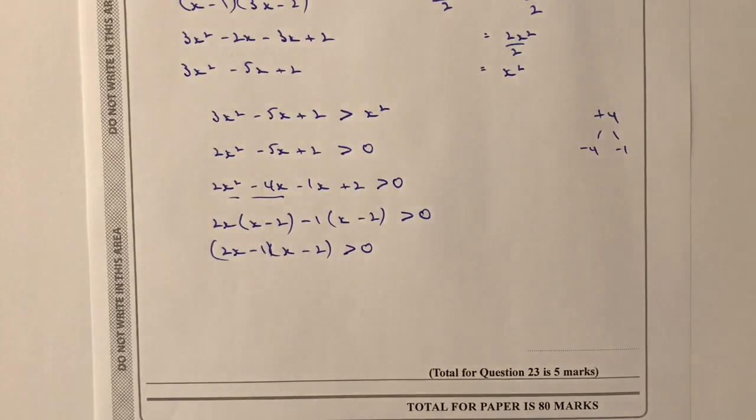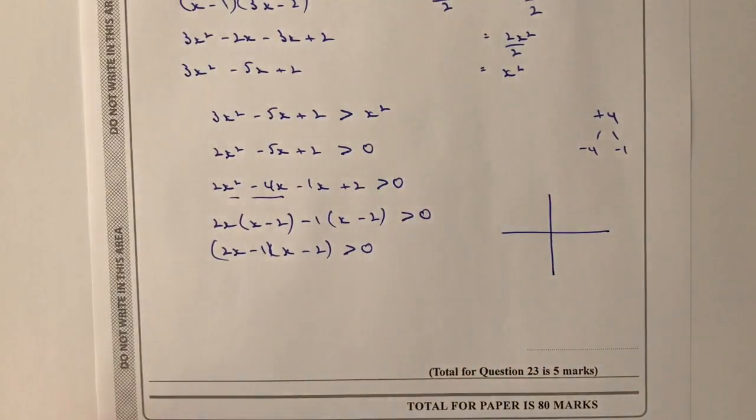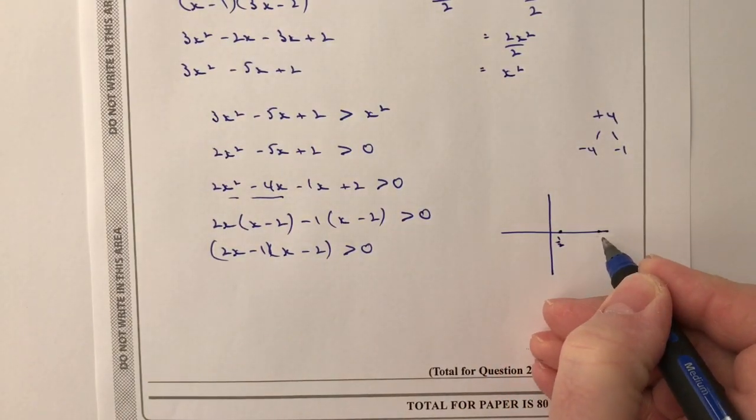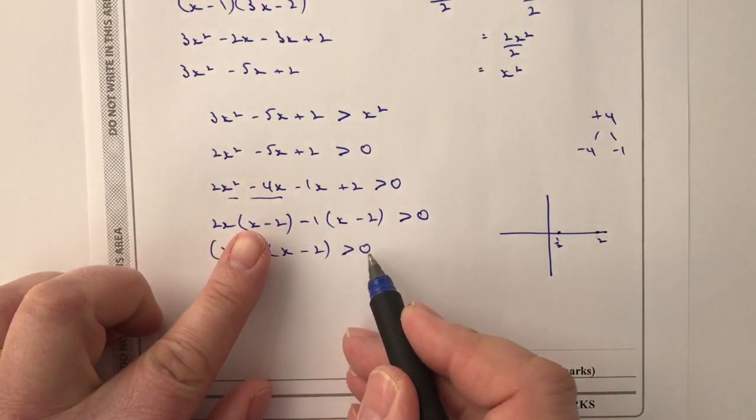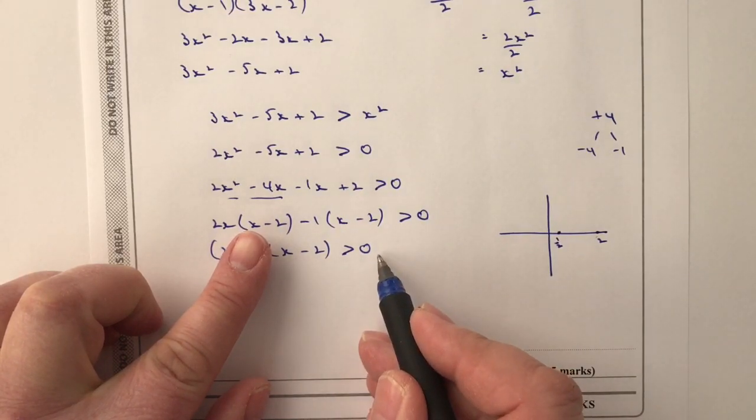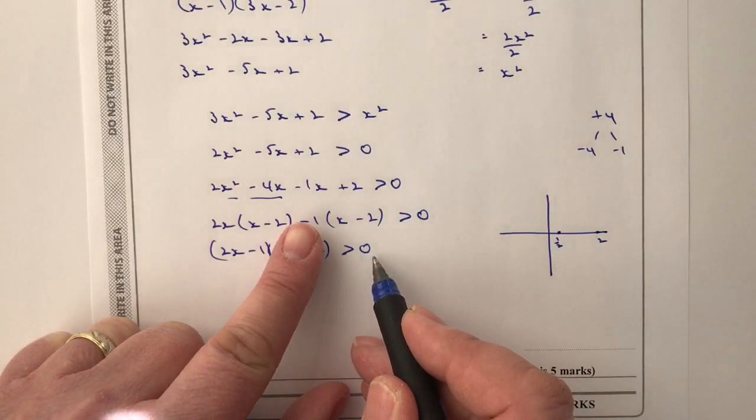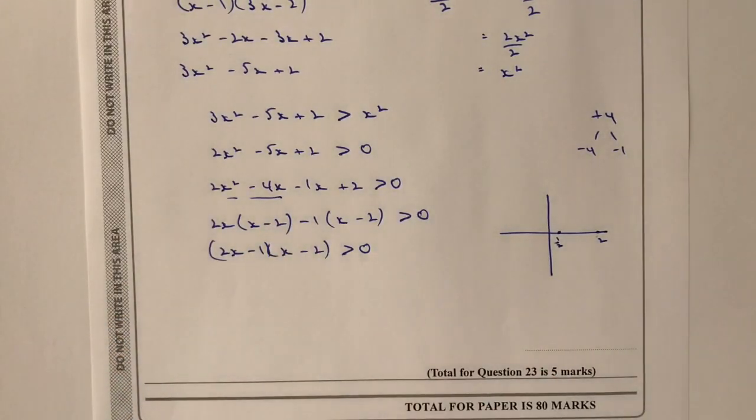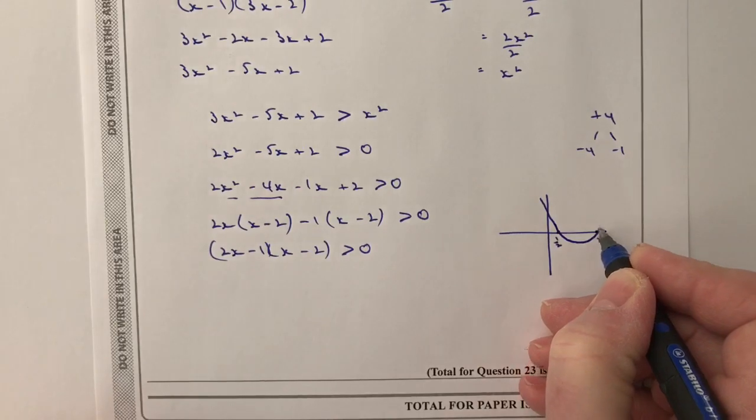So, what we're saying, then, is that, effectively, I've got, if I draw this equation, I've got the roots of the equation as being a positive 1 half and a positive 2. So, if you can imagine, if I make that equal to 0, X minus 2 equals 0, so, therefore, X must equal 2. And if I make that equal to 0, I've got 2X minus 1 equals 0. So, 2X equals 1, so, X must equal a half.